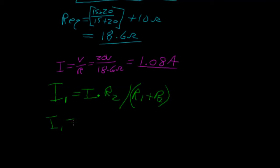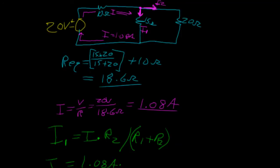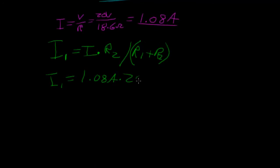I1 equals what we found is 1.08 amps times R2, which is 20, divided by R1 plus R2. 15 plus 20 is 35 ohms. So I1, just plug this in, times 20 divided by 35, 0.62 amps.